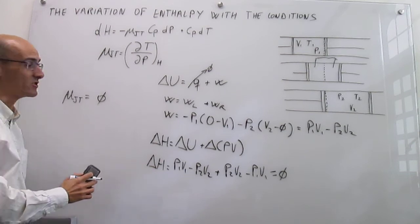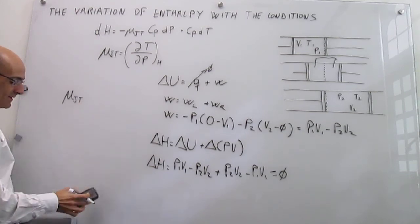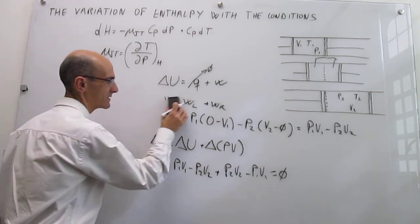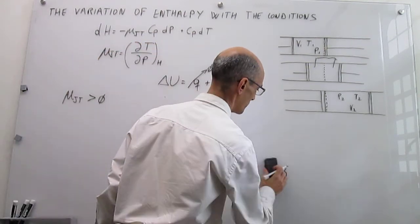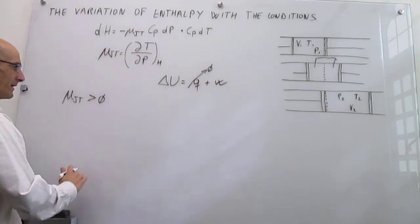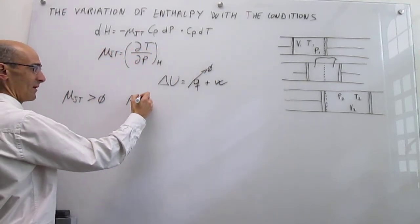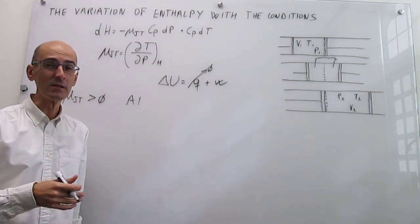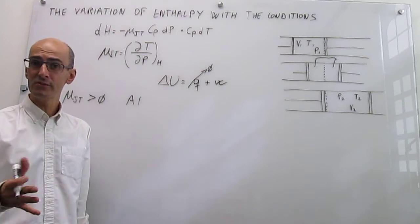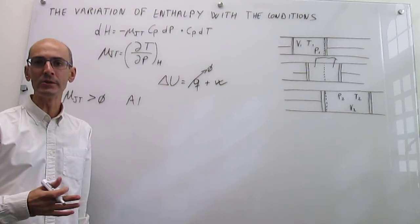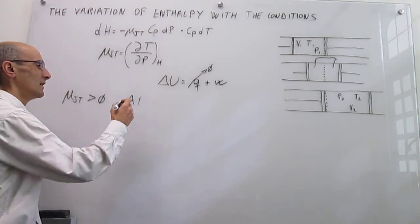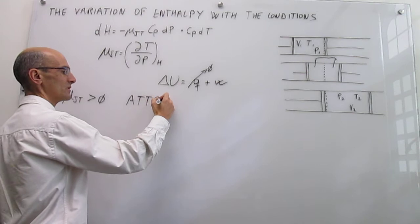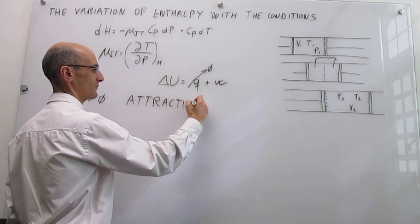For real gases this changes, and the coefficient can be either positive or negative. When it is positive — which is true for most gases except perhaps hydrogen and helium at ambient conditions, around room temperature and pressures close to ambient — attractions are dominant.